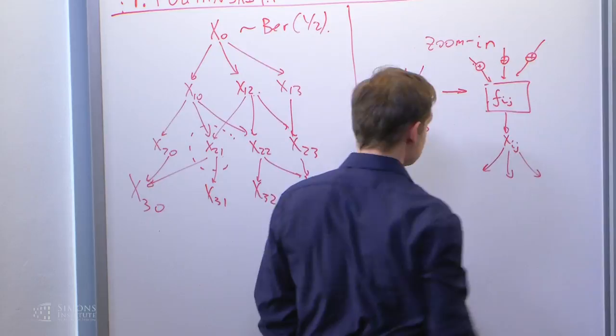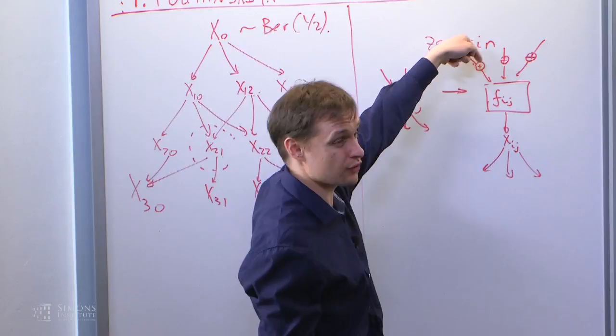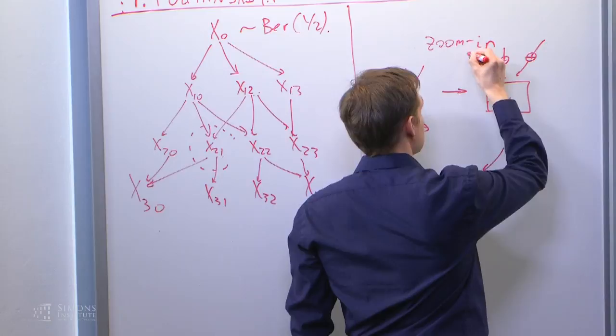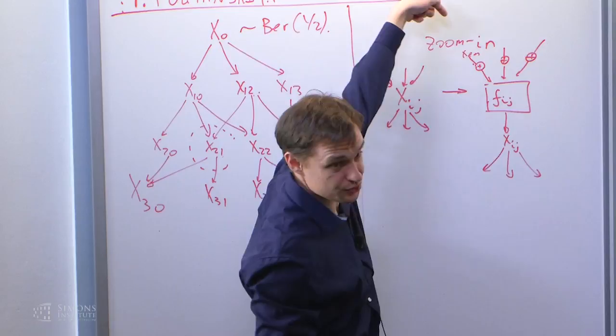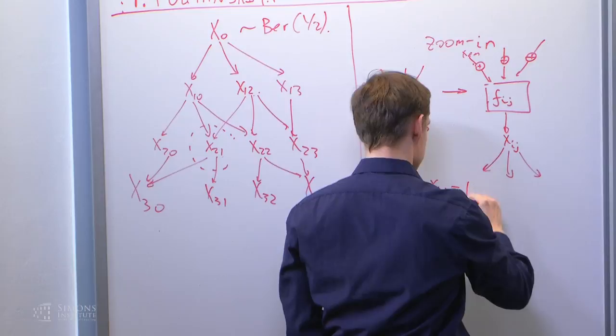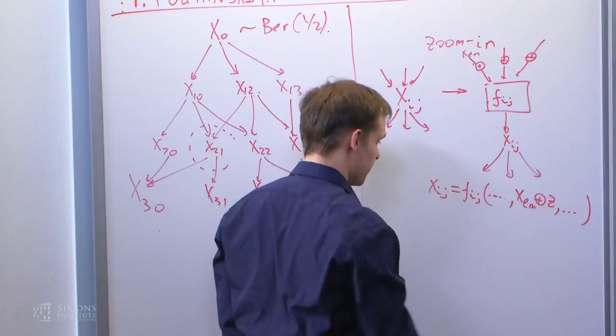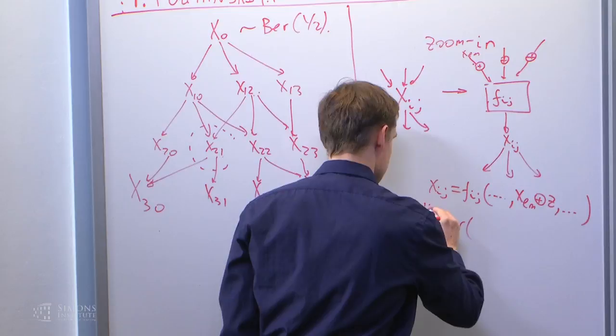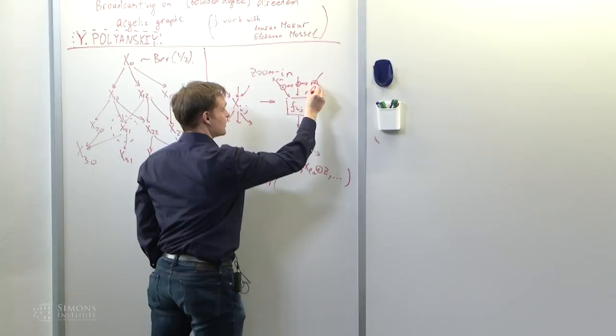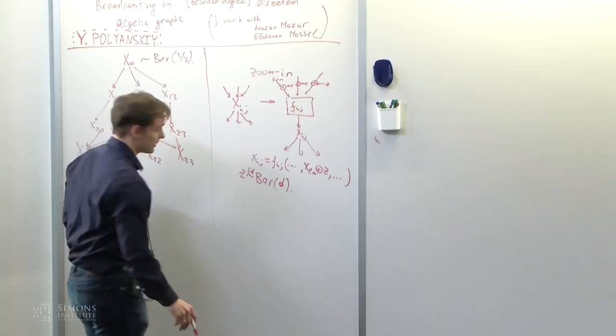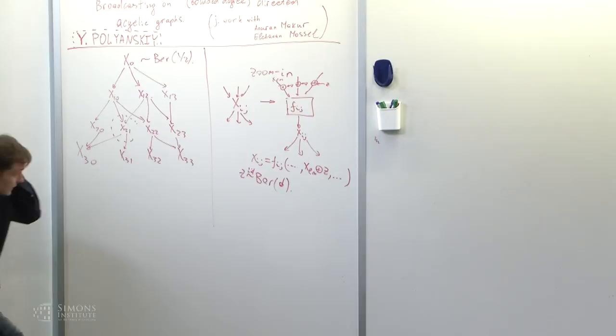I have xij. I have a bunch of arrows coming in, a bunch of arrows coming out. What this represents is the following picture. There is some function fij which takes the prescribed inputs, the inputs coming from the previous layer, and makes some computation. This output is xij, which then gets broadcasted to some descendants.